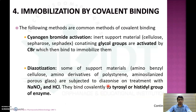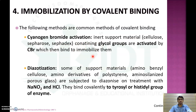There are different methods of covalent binding for immobilization. The first is cyanogen bromide activation, in which inert support materials like cellulose, Sepharose, and Sephadex containing glycol groups are activated by CNBr, which then binds with the enzyme to immobilize it.